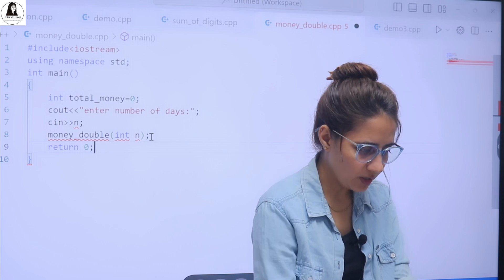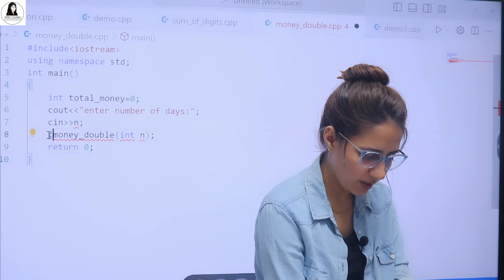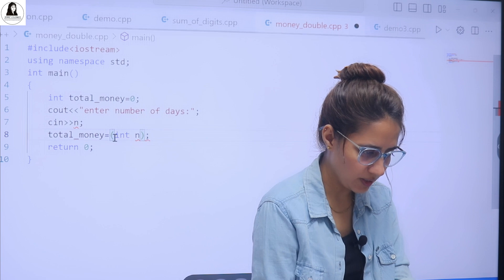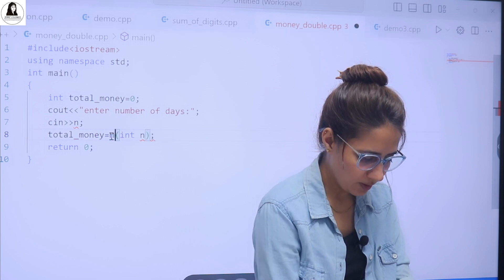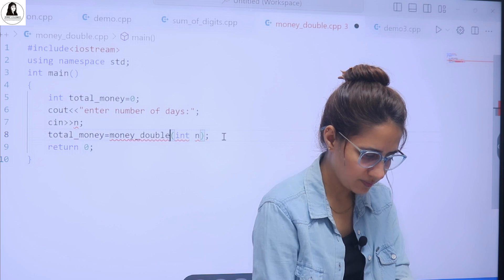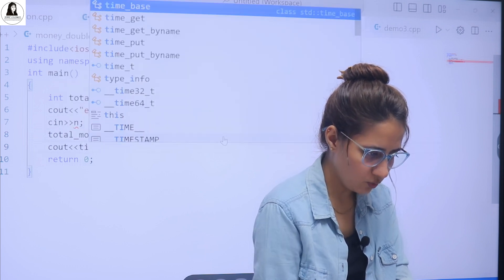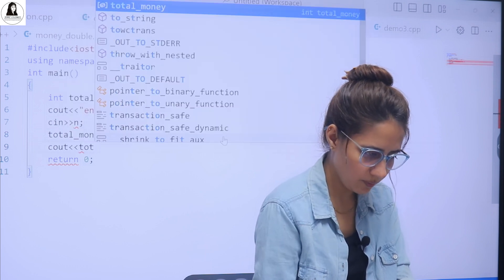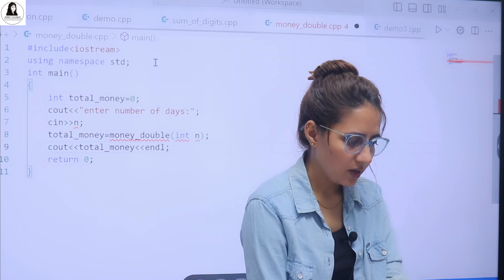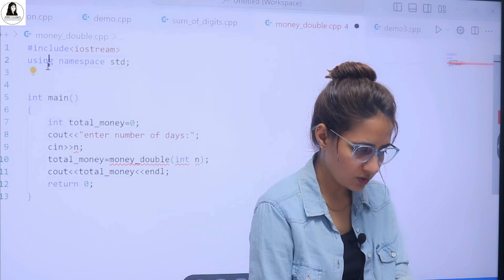Number of days and simply pass number of days here in money double in this. Let's return 0. And whatever it will return, obviously, we will store that in a variable total money. And we will simply print that. Total money and the name is money double. And we will simply print whatever the total money is. That's it.